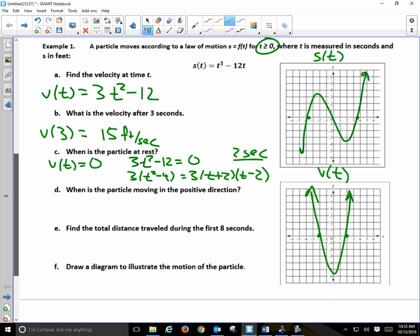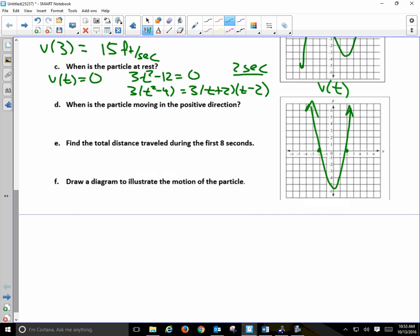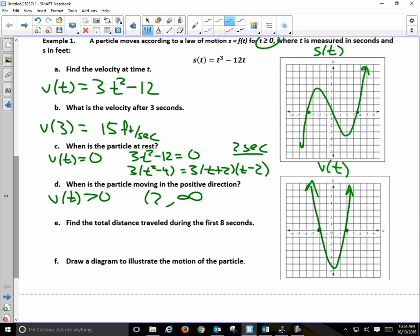Now, this is an important part that people are starting to forget already. When is the particle moving in the positive direction? That's where v of t is greater than zero. So if this is the graph, what does it mean for a graph to be greater than zero? Above the x-axis. So from 2 to infinity, it's above the x-axis. If you look at the original graph, that's where the derivative, so you would have to look at the slope of the tangent lines, wherever that is positive. That's where it's moving in the positive direction. Please make sure you're looking at the correct graph as you do your interpretation.